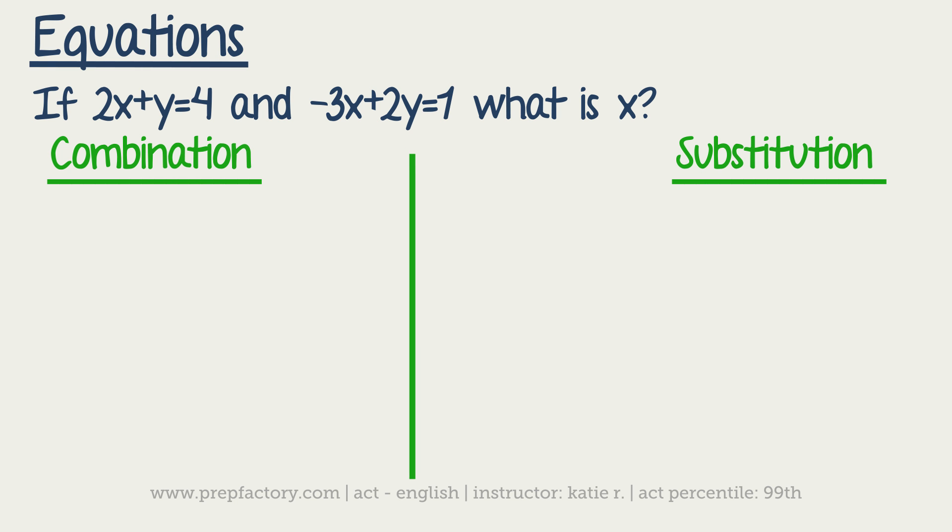So here's an equation. If 2x plus y is equal to 4 and negative 3x plus 2y is equal to 1, what is x? So there's going to be two ways of solving this. There's combination and there's also substitution. So I feel like most people are pretty comfortable with substitution, but we're going to do both just in case.